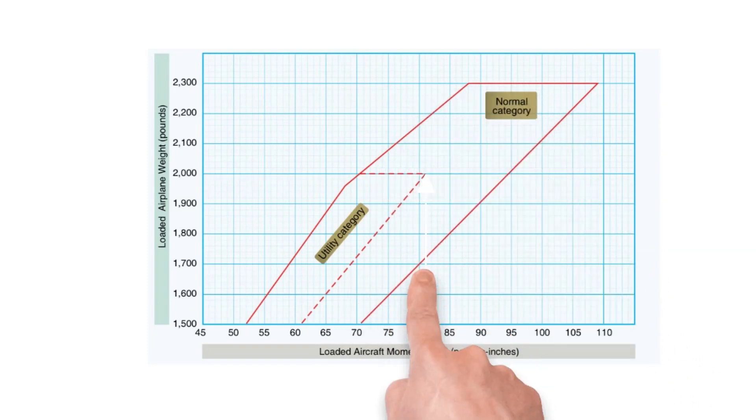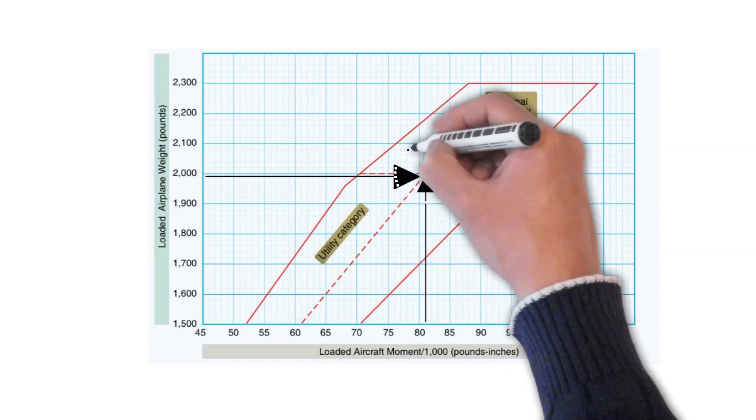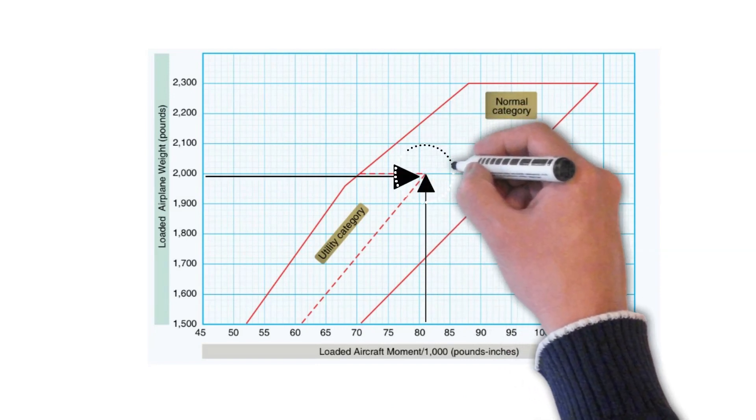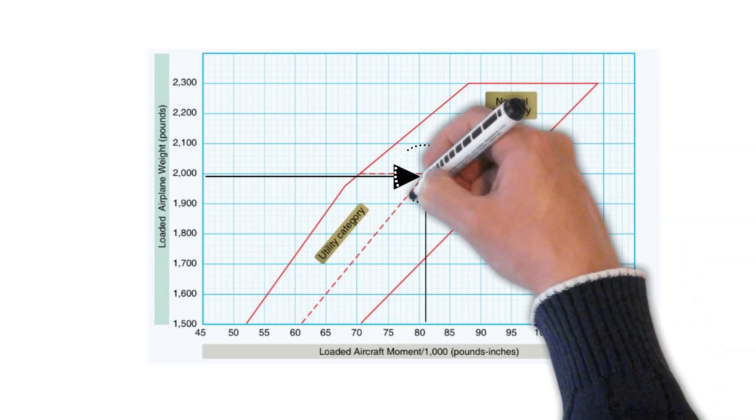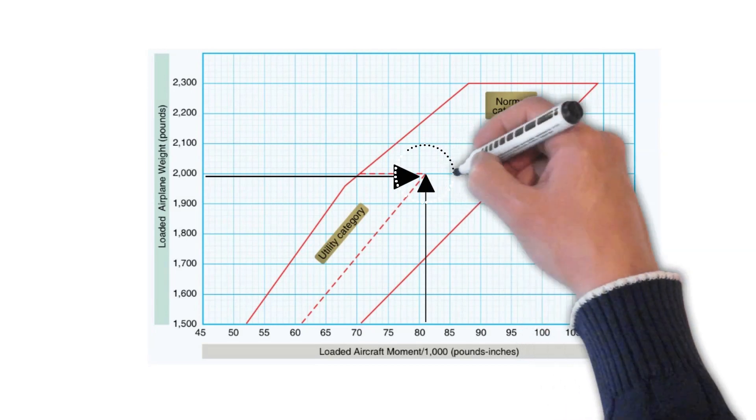One from the left just under the number 2000 since the airplane's weight is 1,999 pounds. Then draw a second line up from the bottom of the chart just to the right of the number 80 since the airplane's moment divided by 1,000 is 81.2. The lines intersect at the upper right-hand range of the utility category.